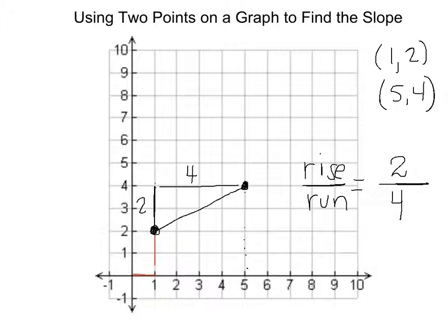As you can see, the rise over run can be reduced to 1 half. So M, which stands for slope, equals 1 half.